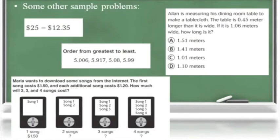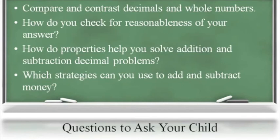Here are some examples of problems your students may be asked to solve as they progress through this unit in their GoMath textbook. Some questions that you may want to ask your child in order to help build their understanding as they progress through this unit are: Compare and contrast decimals and whole numbers. How do you check for the reasonableness of your answer? How do properties of math help you to solve addition and subtraction decimal problems? Which strategies can you use to add and subtract money?